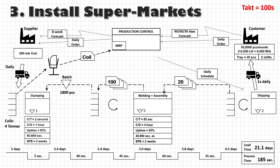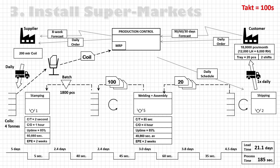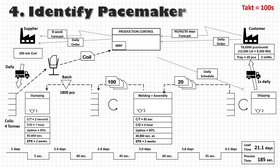Let us move to the next step and identify our pacemaker, which is pretty simple in this case. Since there has to be a continuous flow downstream of the pacemaker all the way to the finished goods store, this welding and assembly process section is clearly our pacemaker process.